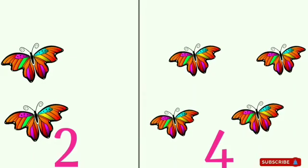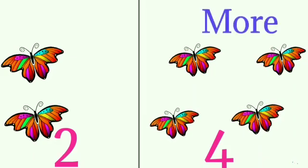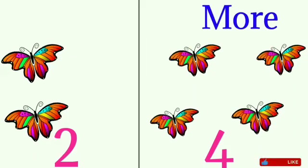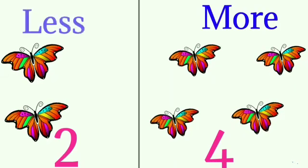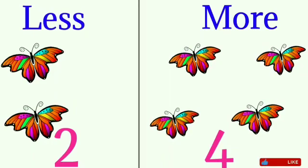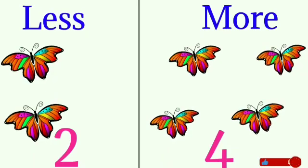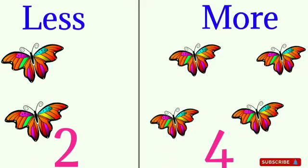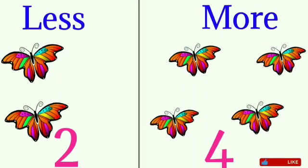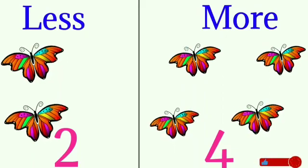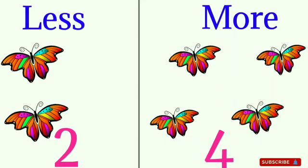Yes, the second group has more butterflies and the first group has less butterflies. Children, two is less and four is more. Two is less than the number four, and four is more than the number two.